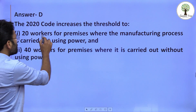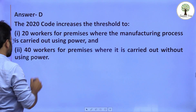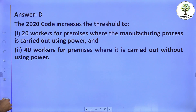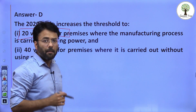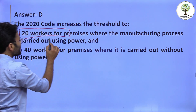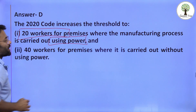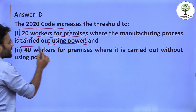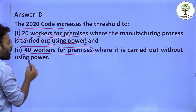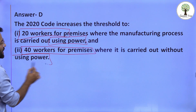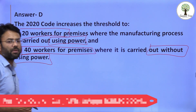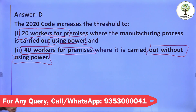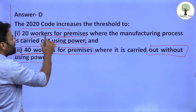Now, if we talk about the 'with power' provision: if power is being used in the manufacturing process, then the requirement is 20 or more workers. If 20 or more workers are working at a premises and power is being used for the manufacturing process, that establishment comes under the preview of this Act. Similarly, if 40 or more workers are working without the use of power, this Act will also be applicable.